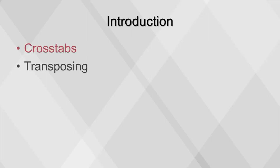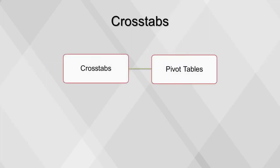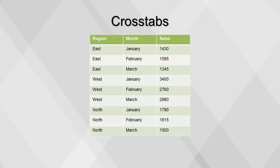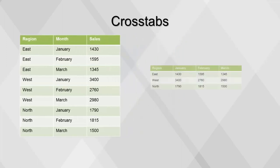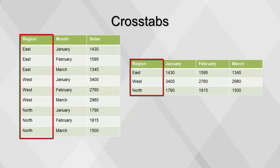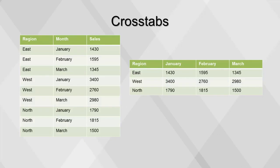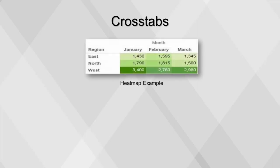This video will cover crosstabs and transposing. Crosstabs are also called pivot tables—they are used to compare one measure across two or more dimensions. One dimension will have its values transformed into columns and the other dimensions will be aggregated, resulting in a table with fewer rows but more columns. For example, a table showing sales by region and month can be transformed with a crosstab function: region is the grouping field, month is the header field, and sales is the data field. There can be multiple grouping fields, but only one header field and one data field are allowed. Crosstabs are an effective way to summarize and present data, as trends are easier to identify. In data visualization, color is added to build a heatmap. Crosstabs are also used in statistics to build contingency tables.